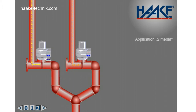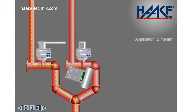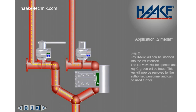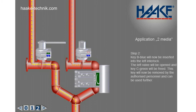Step 2. Key B blue will now be inserted into the left interlock. The left valve will be opened and key C green will be freed. This key will now be removed by the authorized personnel and can be used further.